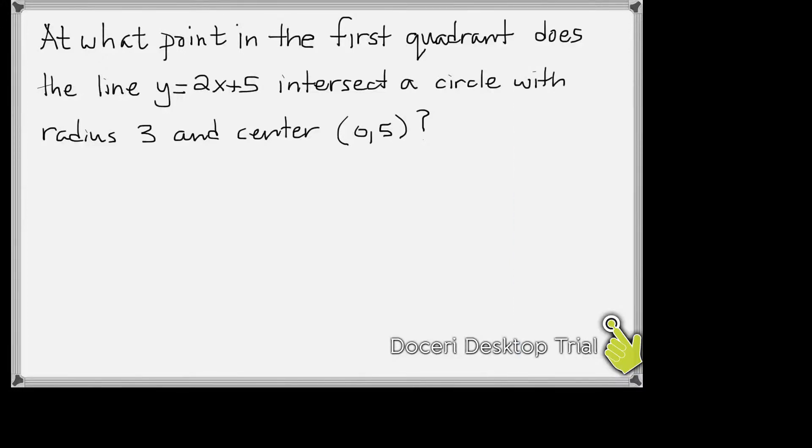All right, in this video we have the following problem. It says, at what point in the first quadrant does the line y equals 2x plus 5 intersect the circle with radius 3 and center (0, 5)?